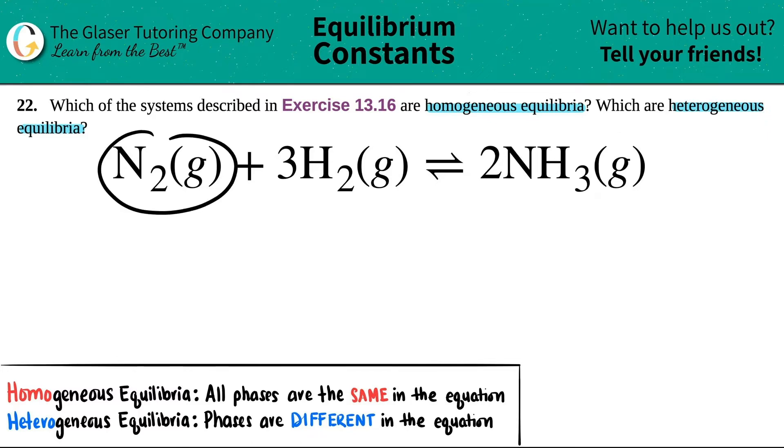In this case, we have N2 gas plus 3H2 gas, which comes to equilibrium with 2NH3 gas. Got to figure out if this is homogeneous or heterogeneous equilibria.